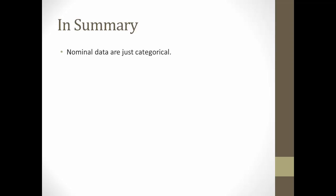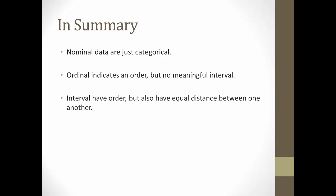So, in summary, nominal data are just categorical. Ordinal indicates order, but no meaningful interval. Interval, these have order, but also equal distance between one another. Ratio has order, equal distance between intervals, and a true zero point. And these data are basically used in different ways in statistics, and that's why they're important to learn.